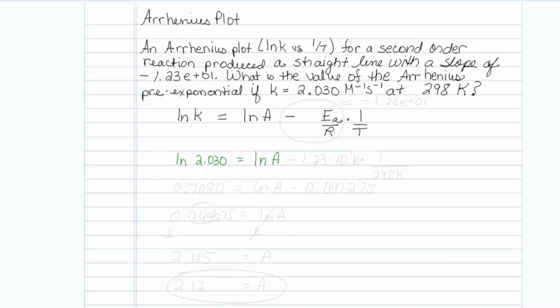Now, the slope right here is actually equal to minus 1.23 times 10 to the plus 1. So that's what I'm going to put in here, minus 1.23 times 10 to the first power, times 1 over T, which is 298 K.